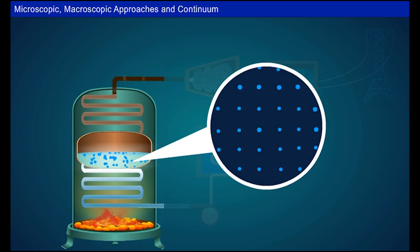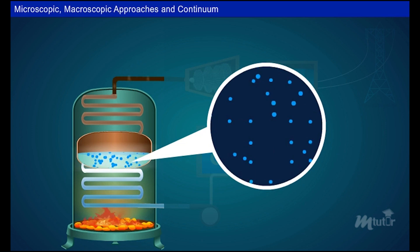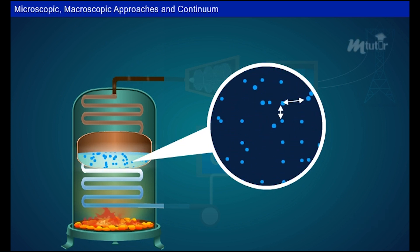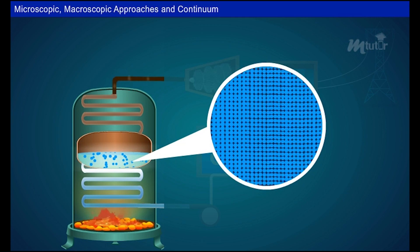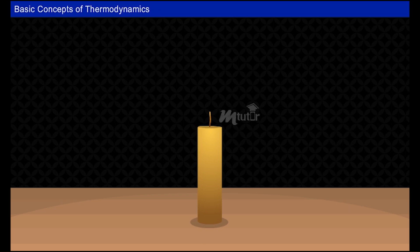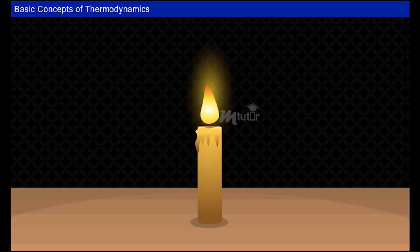This is called the macroscopic approach or classical thermodynamics. From the atomic nature of substances, we know that atoms in matter are widely spaced. In the macroscopic approach, while considering a volume of molecules at any instant, due to random movement of molecules, the number won't be the same in another instance. So the concept of continuum is used, in which the atoms in matter are treated as continuous and homogeneous — that is, a continuum.